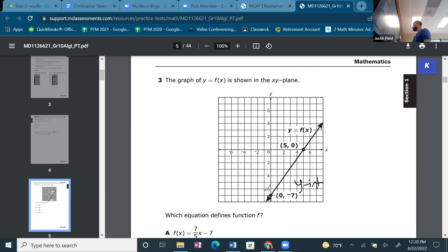And slope is going to be 7, 5. So the slope is rise over run, 7/5. So the equation would be 7/5x - 7.